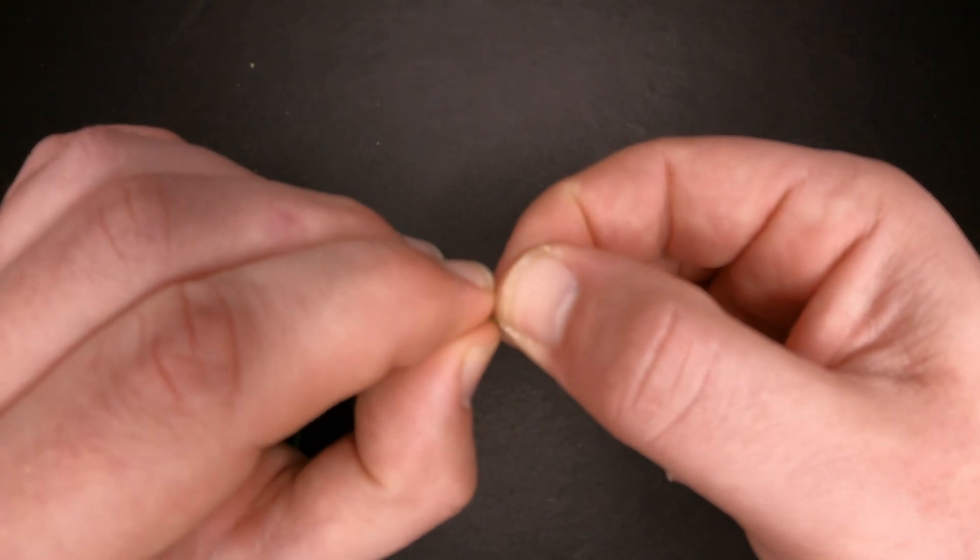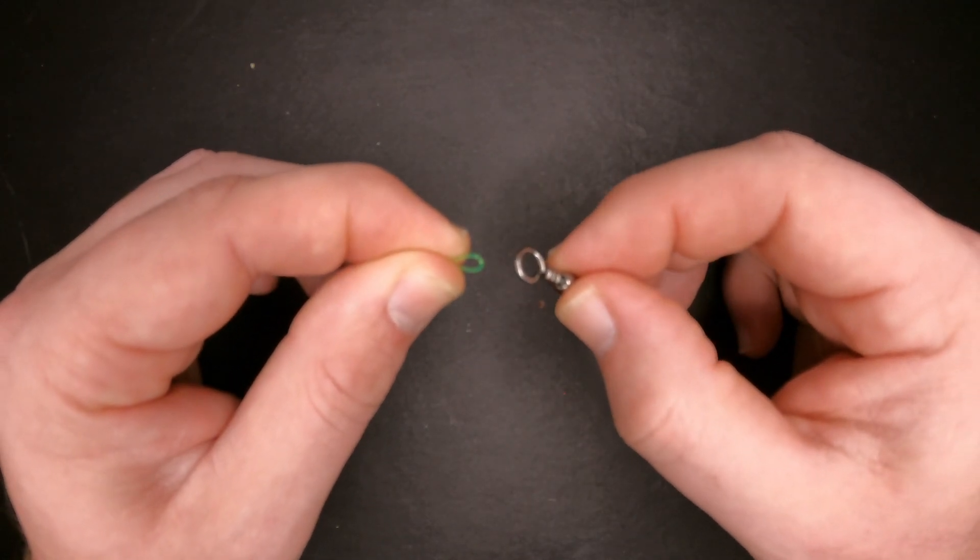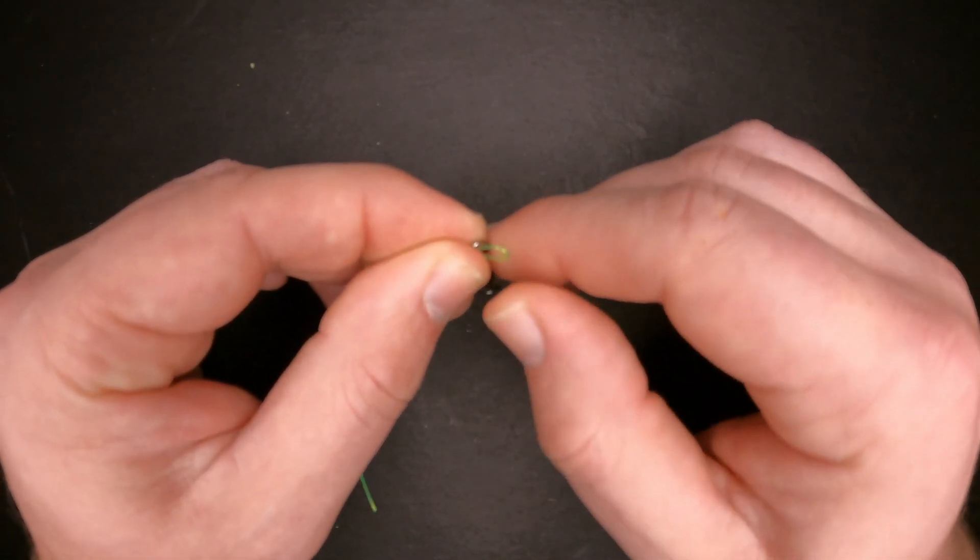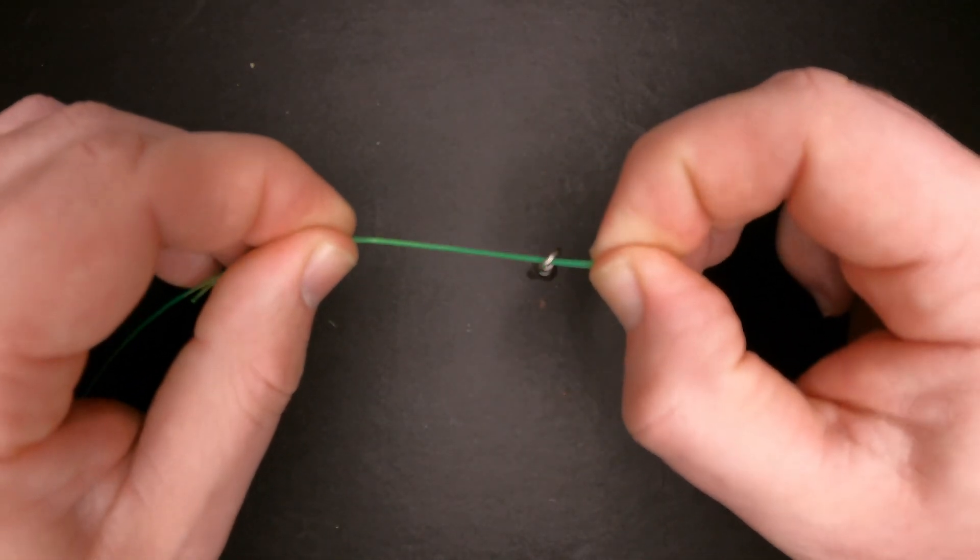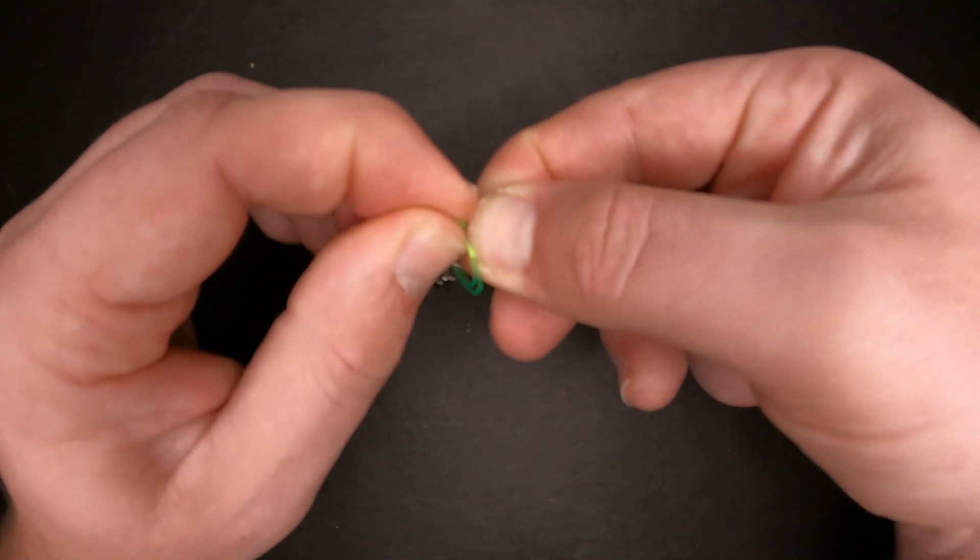So I'm going to go ahead and tie my line onto a barrel swivel and I'm going to do that with a palomar knot. To tie a palomar knot you're going to double over your line and then feed it through one of the eyes of the barrel swivel. You're going to create a basic overhand knot with the doubled over line.